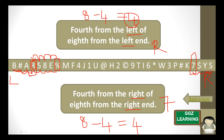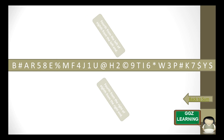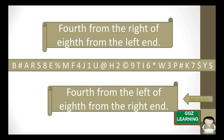If they give 2 different sides, what do we do? Let's see what happens when they give 2 different sides. Here, what they have given is both at different sides — one is right and one is left. And here again they have given both at different sides — left and right.